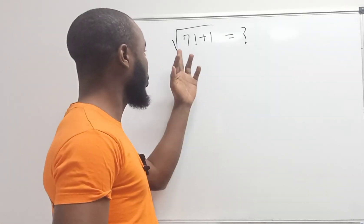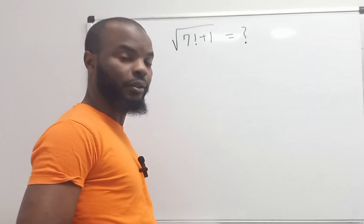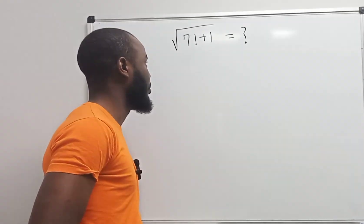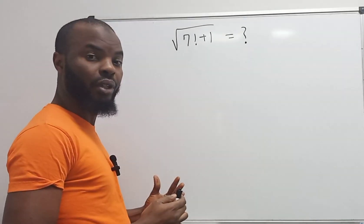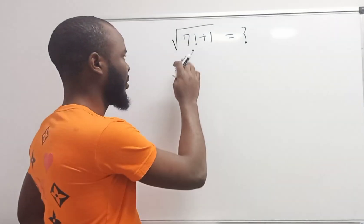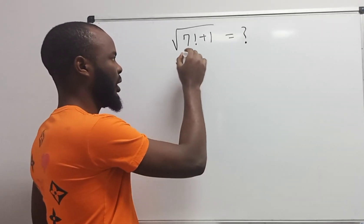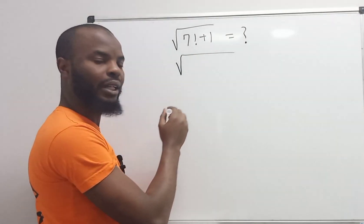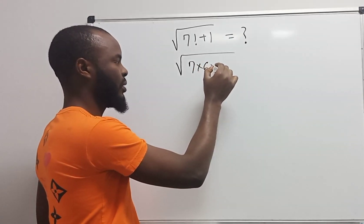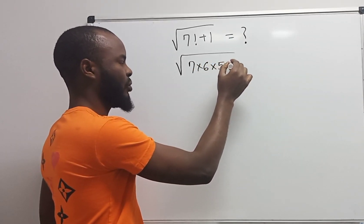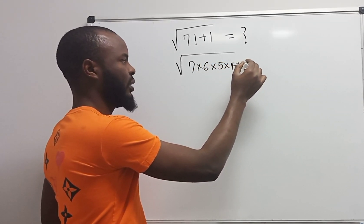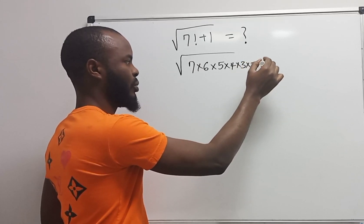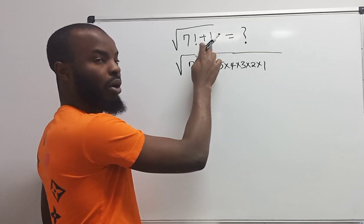Welcome back. Today I want to find the square root of 7 factorial plus 1. Follow me now. We know the rules of factorial. Now we're writing this given equation. We have 7 factorial to be 7 times 6 times 5 times 4 times 3 times 2 times 1 plus 1.